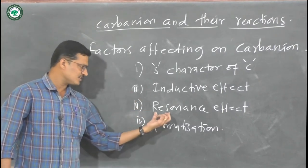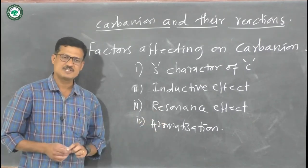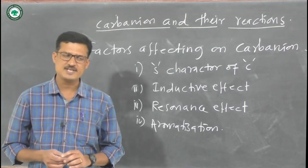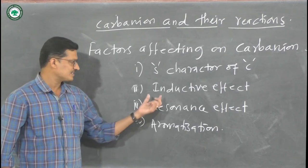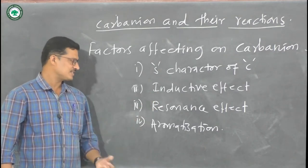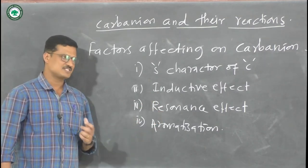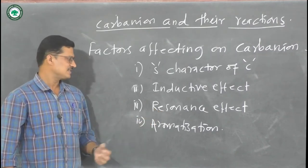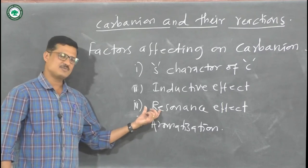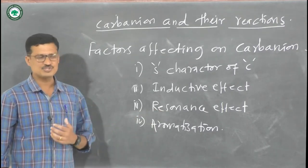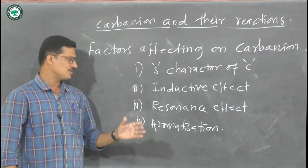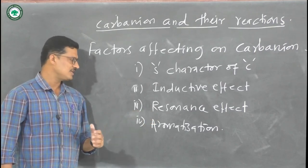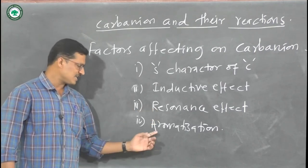The third factor — the resonance effect: similar to the inductive effect, resonance has two types: -R and +R. When there is a -R effect, the carbanion is well stabilized. Groups that withdraw electrons, such as the cyanide group and nitro group, give the -R effect — carbanions form easily and are stabilized by these groups.